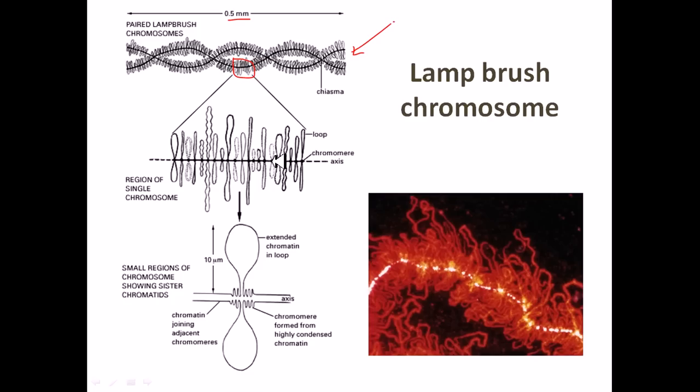In the middle we have the axis. This axis is made up of DNA strands itself. This axis is really strong and contains major DNA sequences. There are different regions, different points in this axis, and these points are called chromomeres.